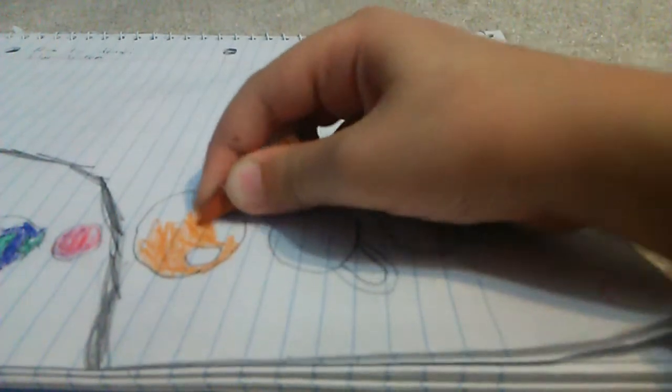So now we need to do the gas giant planets and Pluto. I already drew them, so now time to color. Let's use this. Okay, let's color in the rest of Jupiter and its Great Red Storm, this spot. Now we need a red.